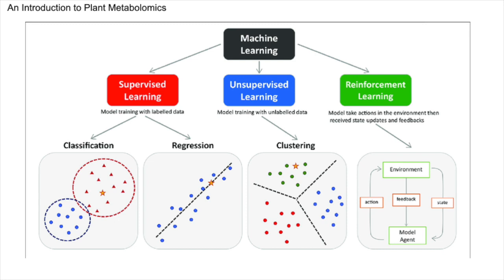Unsupervised learning involves extracting patterns or structures from input data without explicit guidance. In post-harvest management, unsupervised learning methods are utilized to uncover hidden relationships within metabolomic datasets, aiding in the identification of biomarkers associated with quality deterioration or detecting anomalous patterns indicative of spoilage. Reinforcement learning revolves around agents learning to make decisions through trial and error interactions with an environment, with the goal of maximizing cumulative rewards. Although less commonly applied in post-harvest management, reinforcement learning holds potential for optimizing decision-making processes related to crop storage and quality control.